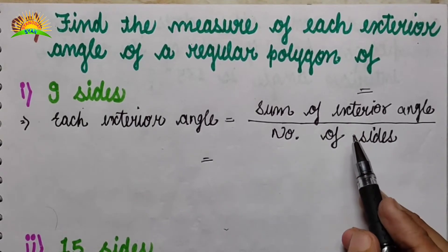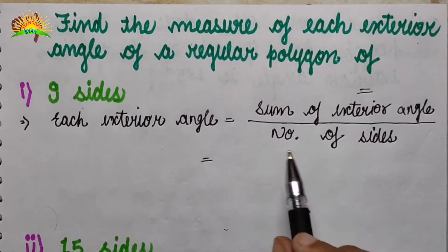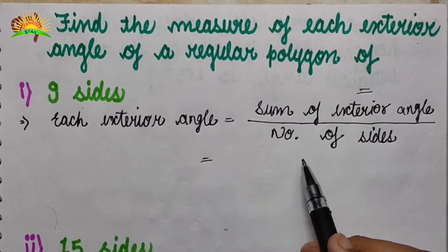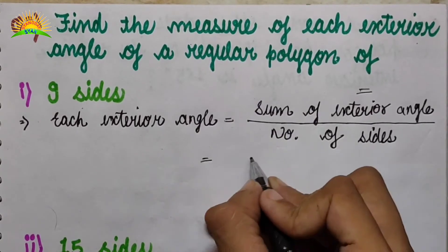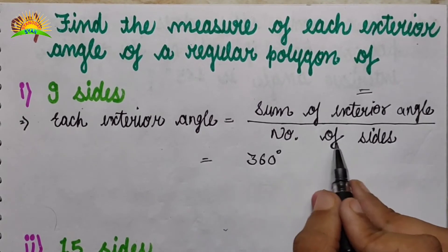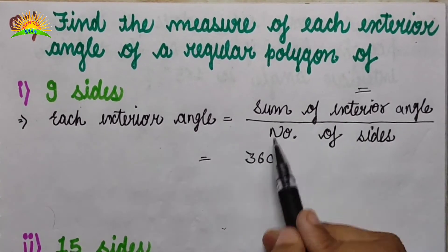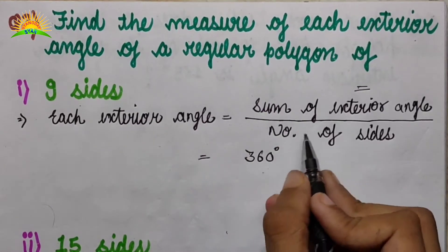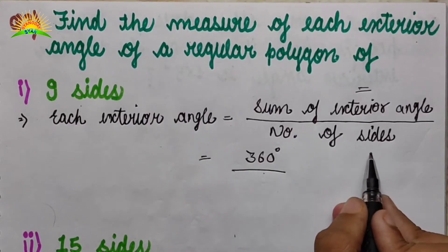We read about this earlier — the sum of all exterior angles is equal to 360 degrees. So the formula becomes 360 degrees divided by the number of sides.